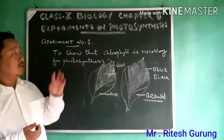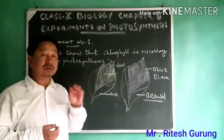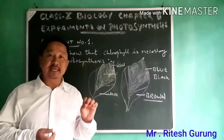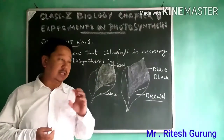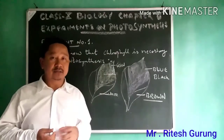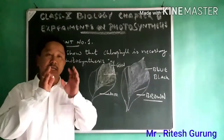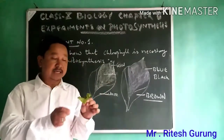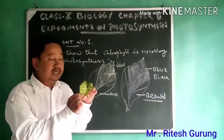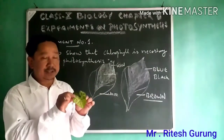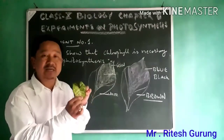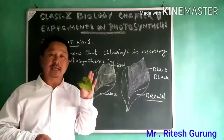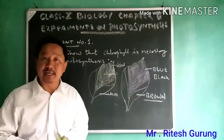To prove this, you need to consider a variegated plant — a plant containing multi-coloured leaves. Usually leaves are green, but some plants have multi-coloured leaves where not only green portions are present but also white portions. Plants with leaves like this are called variegated plants.